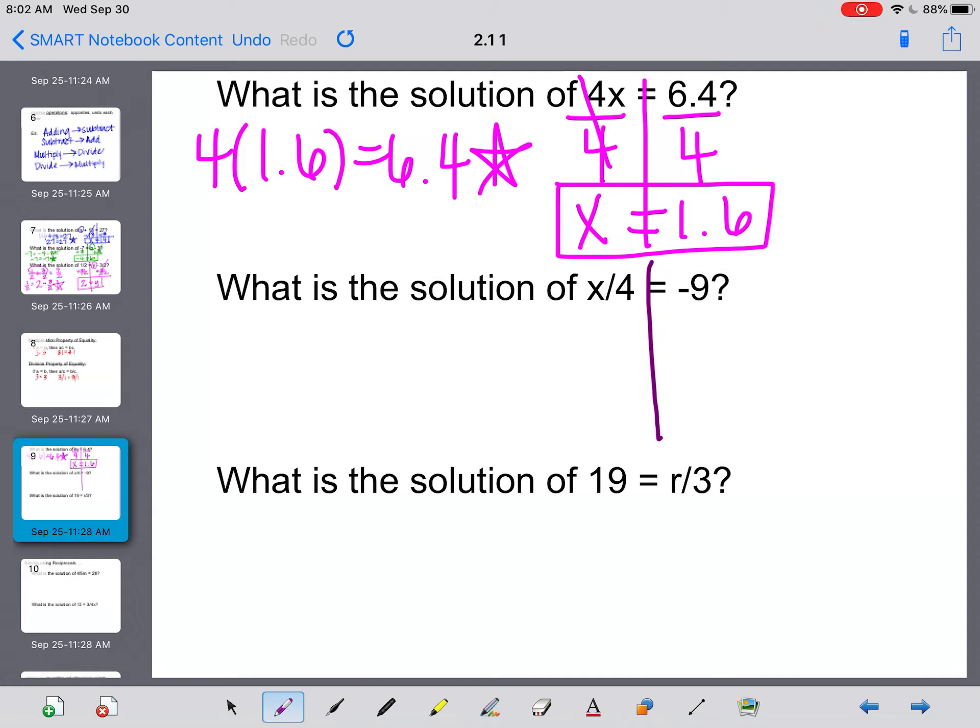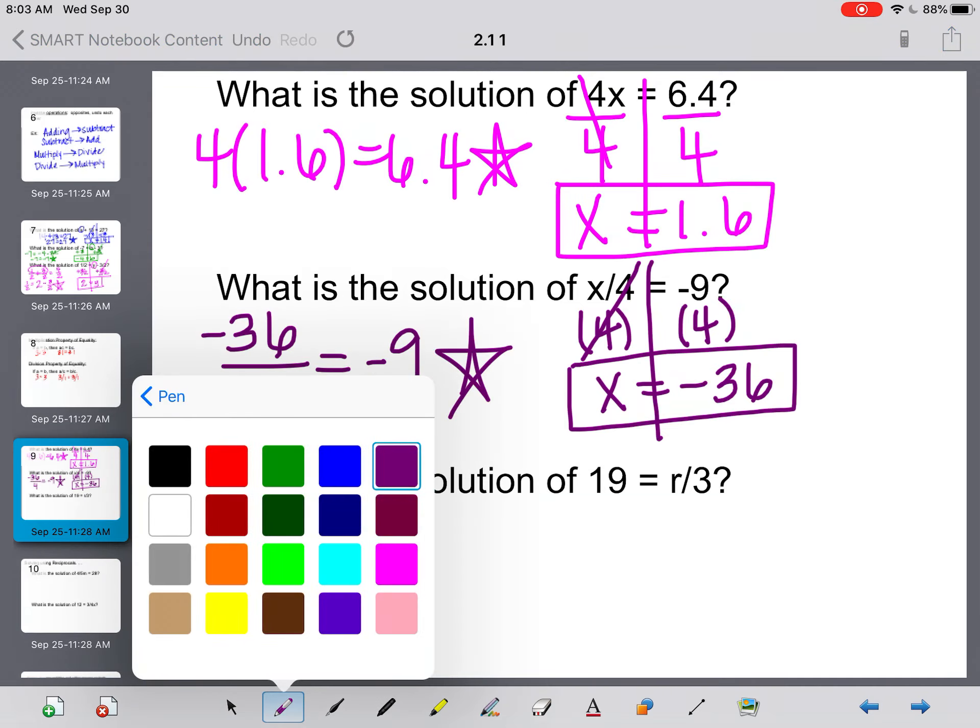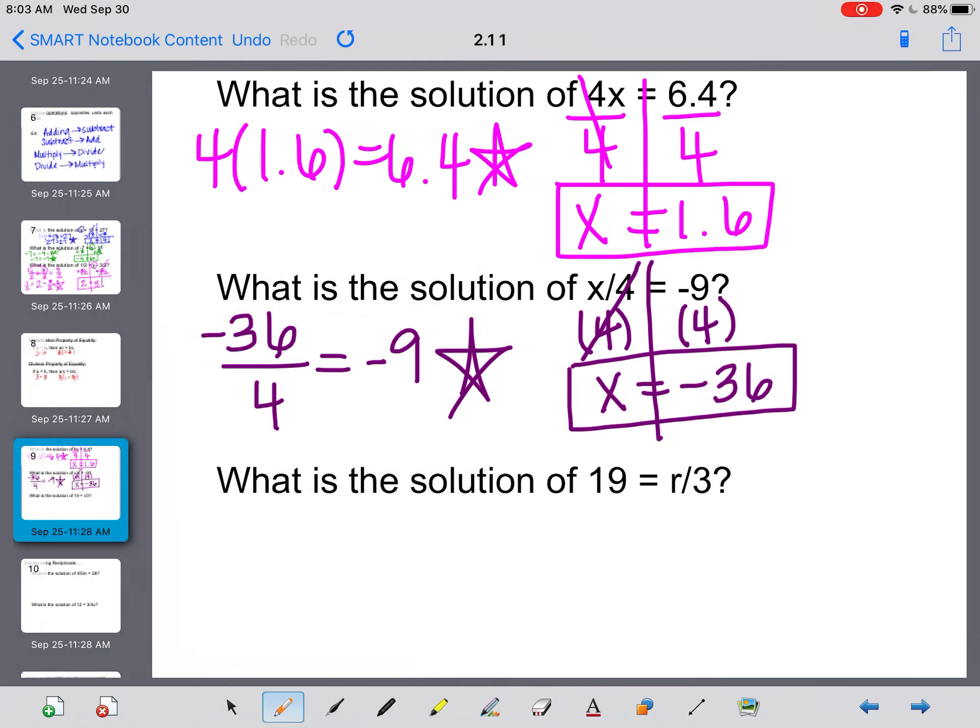What is the solution of X/4 = -9? The inverse of dividing is multiplying, so I'm actually going to multiply both sides by 4. That will cancel this out, leave me with an X, and -9 times 4 is -36. So then we'll double check. -36 divided by 4, we're hoping equals -9, and it does. So we are good.